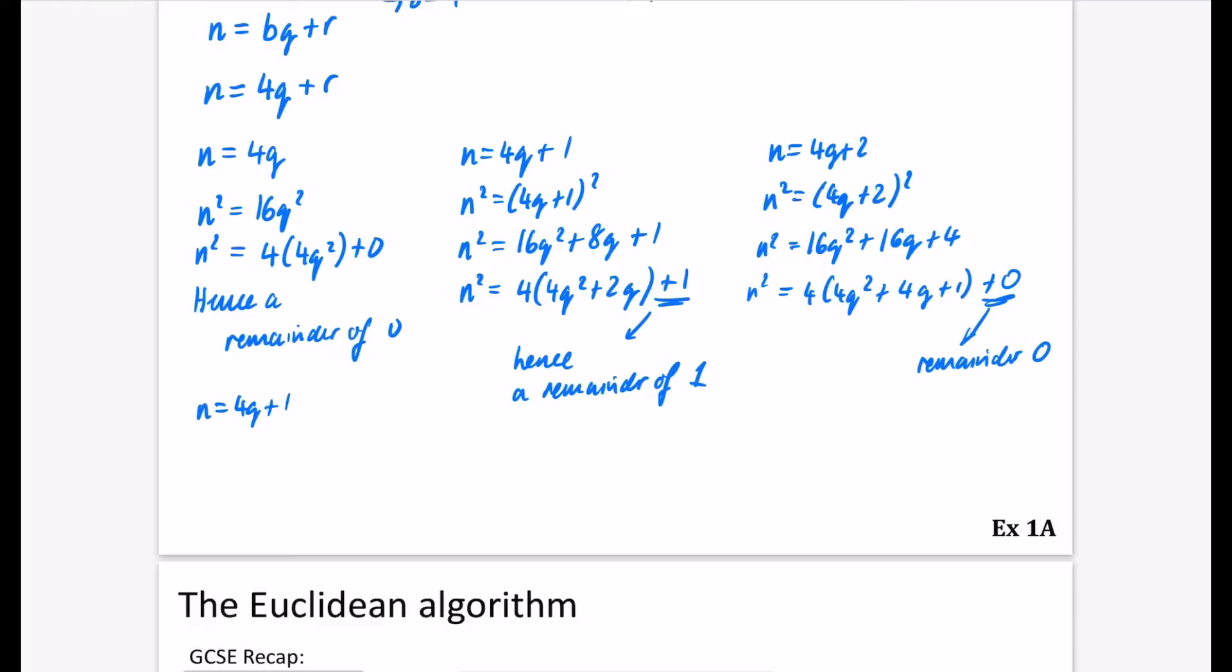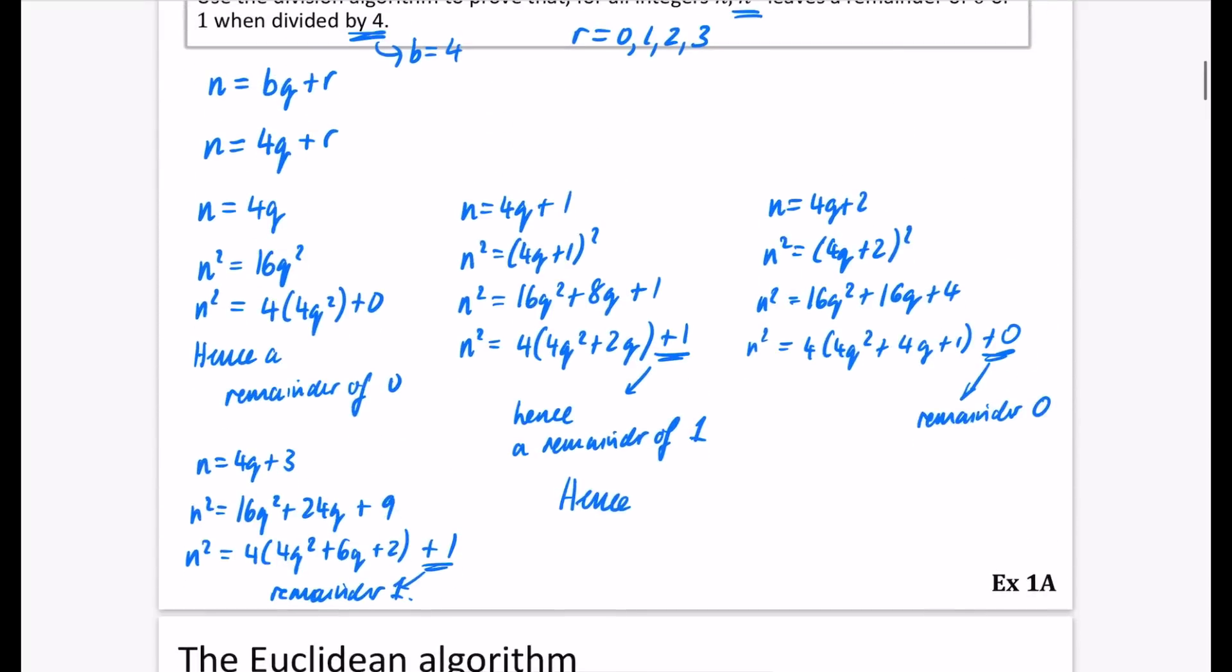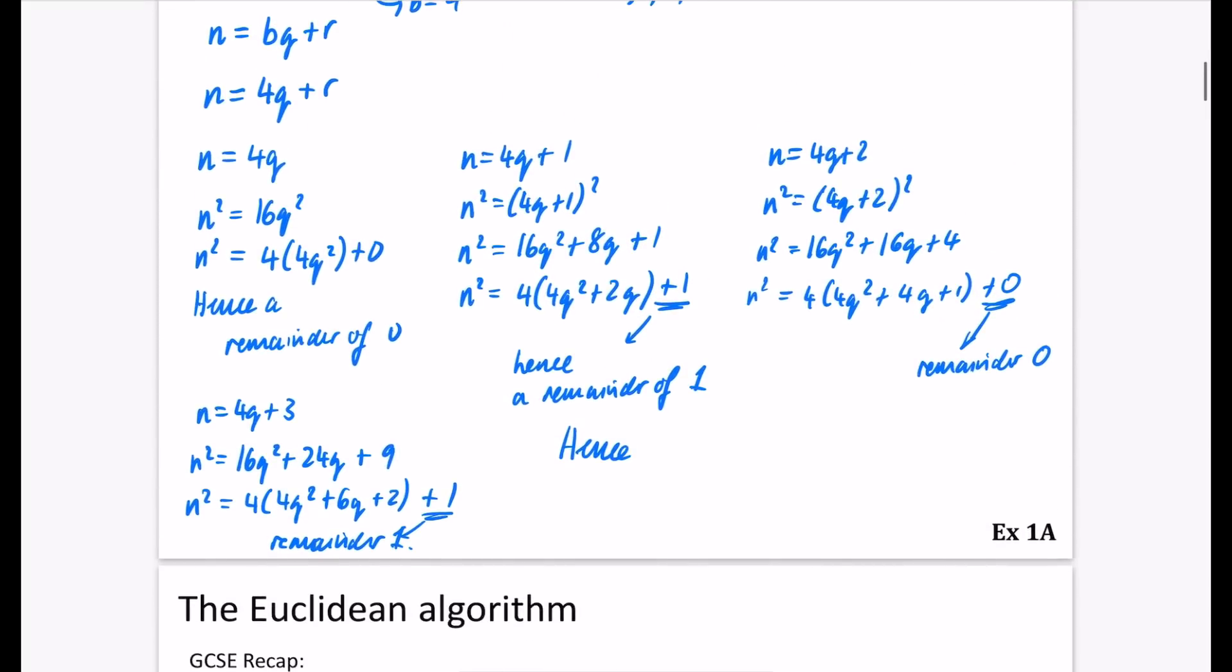And so our last one is to do 4q plus 3. So when I square that, it's just going to be 16q². 4 times 3 times 2, that is going to be 24q plus 9. So when I factor out a 4, I get 4(4q² plus 6q plus 2). But that gives me 8. So there is a 1 here. So I'm going to say remainder 1. Now, because it's a proof, we do need to have just a conclusion at the end. So I'm going to say, hence, what does it say? For all integers n, n² has a remainder of 1 or 0. Hence, for all integers n, n² leaves a remainder, or residue, remainder of 0 or 1 when divided by 4.